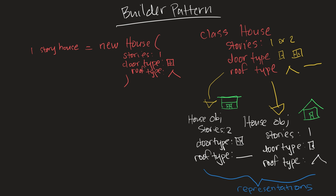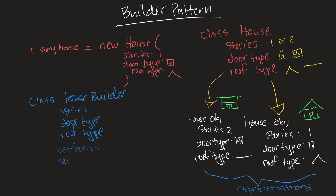In the builder pattern, we want to separate the construction of an object from its representation — leaving that responsibility to the builder. A simple example: we'd have a class called HouseBuilder with attributes stories, door type, and roof type. Within this class, we'd have methods to set these fields — set stories, set door type, and set roof type. We'd also have a method called build that constructs the house, returning a new house via the constructor method.